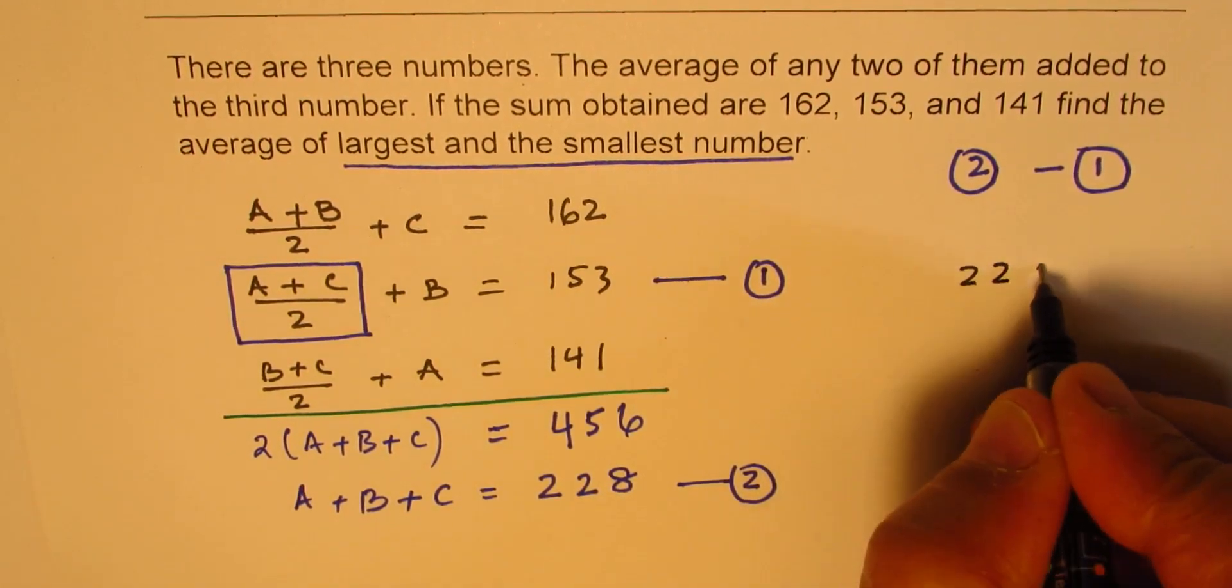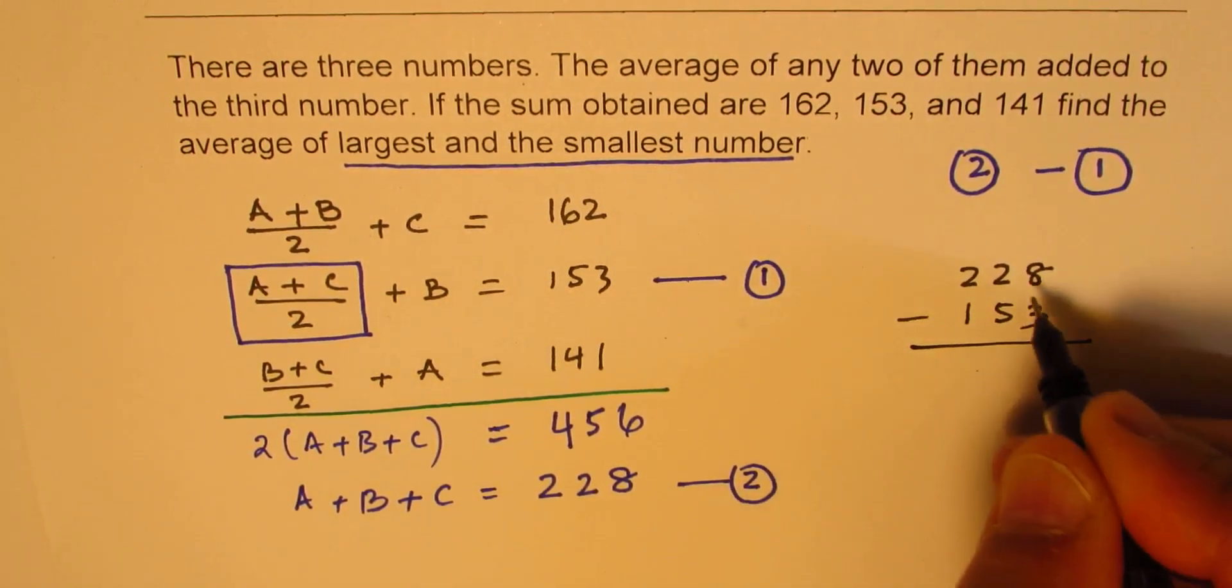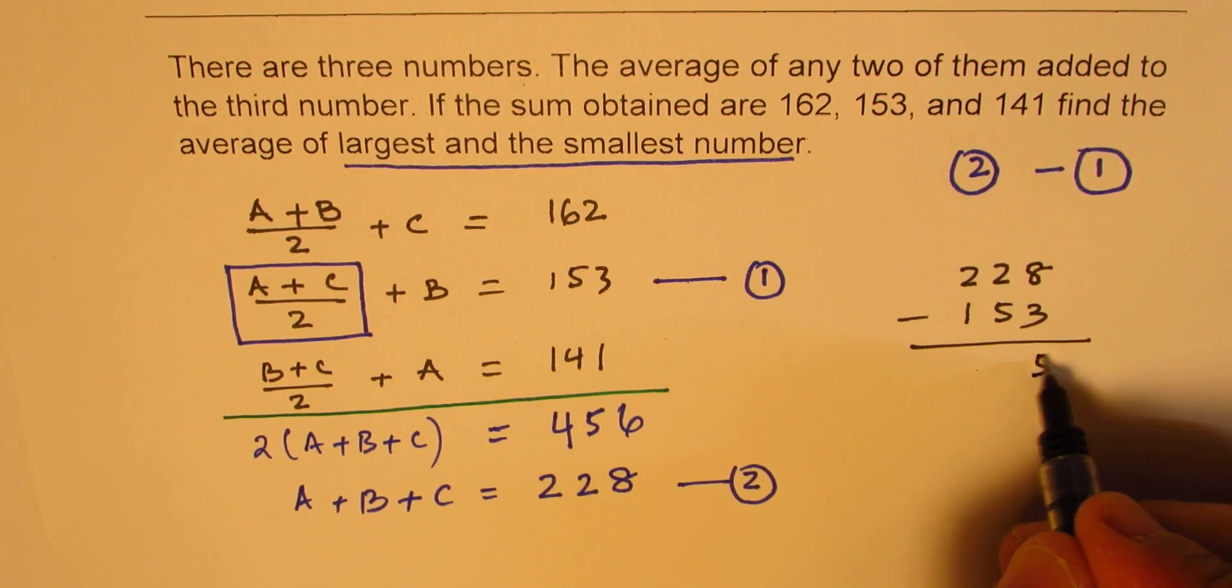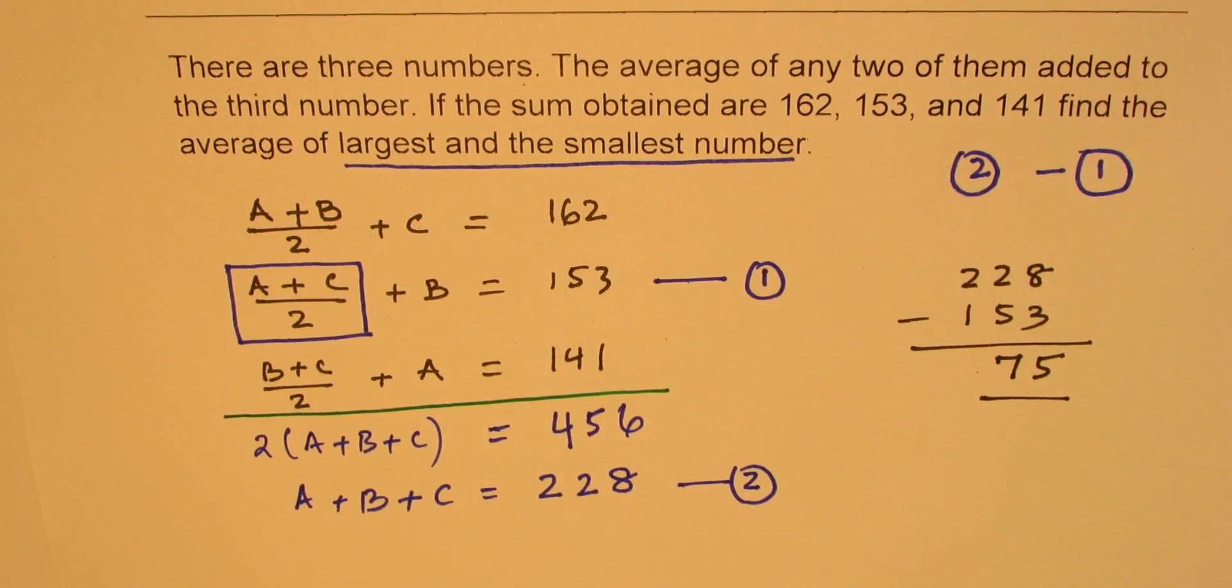And so our answer is, let me write it in a different ink, 228 take away 153. So 8 when you take away you get 5, and from 12 you get 7, so you get 75 as your answer. Do you see that? So it should take that much of time to do such questions.